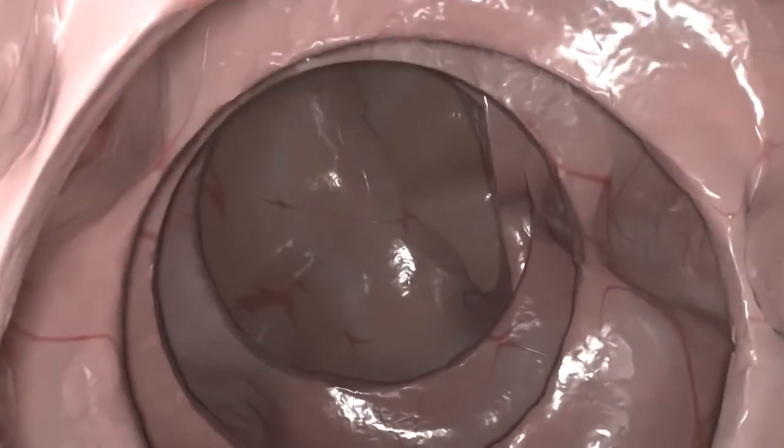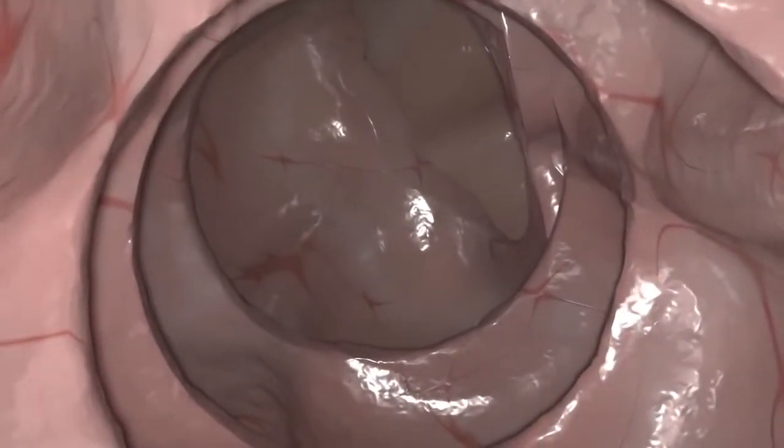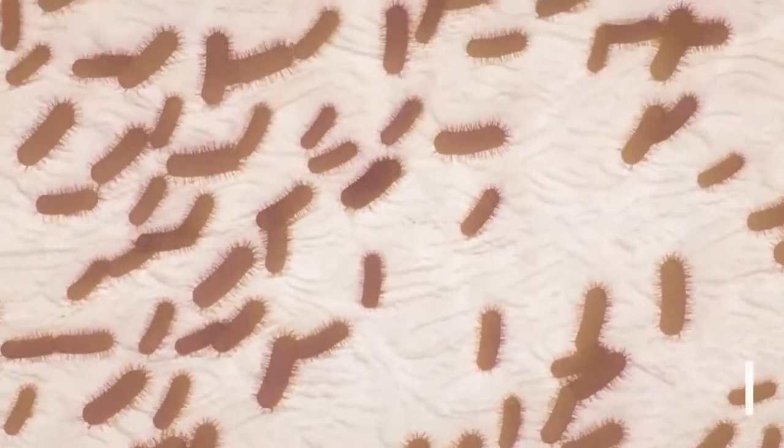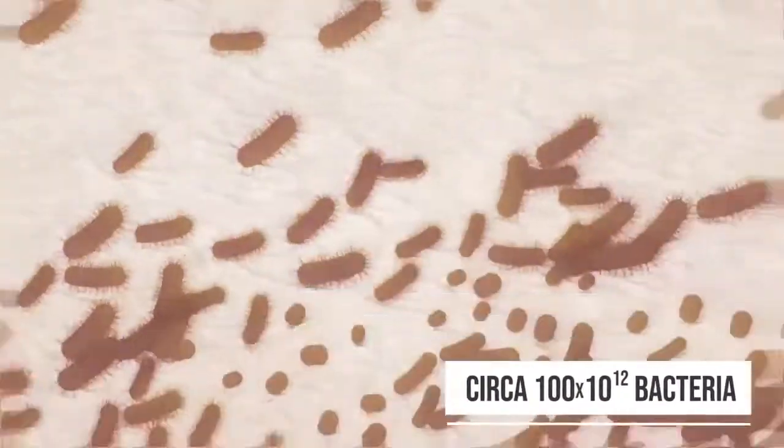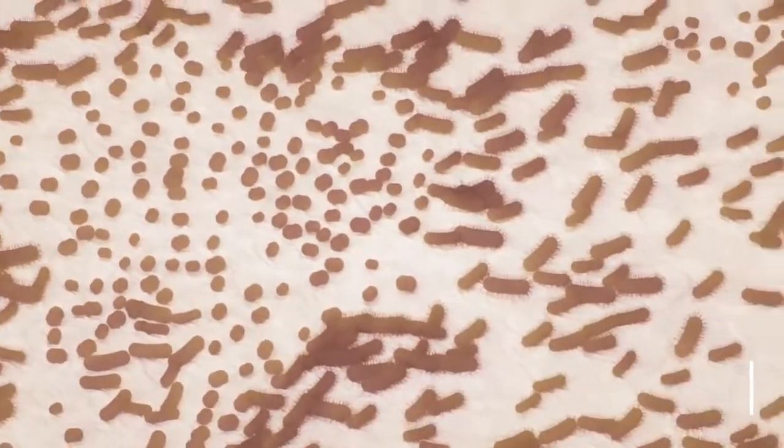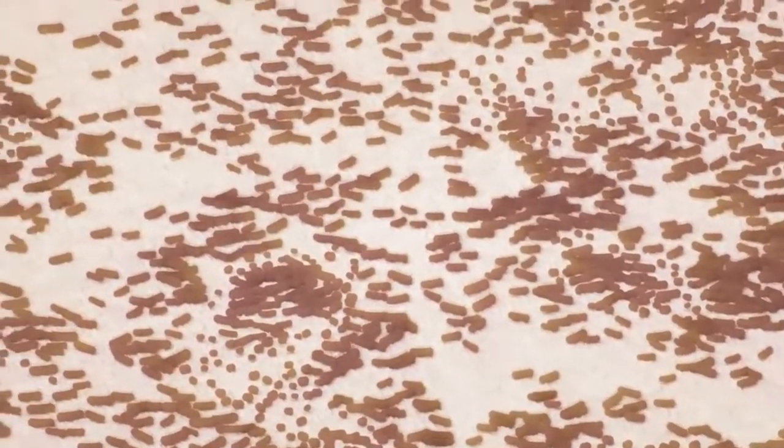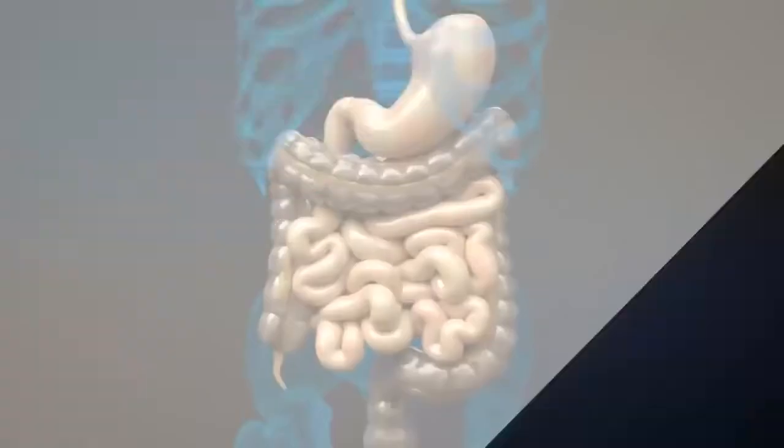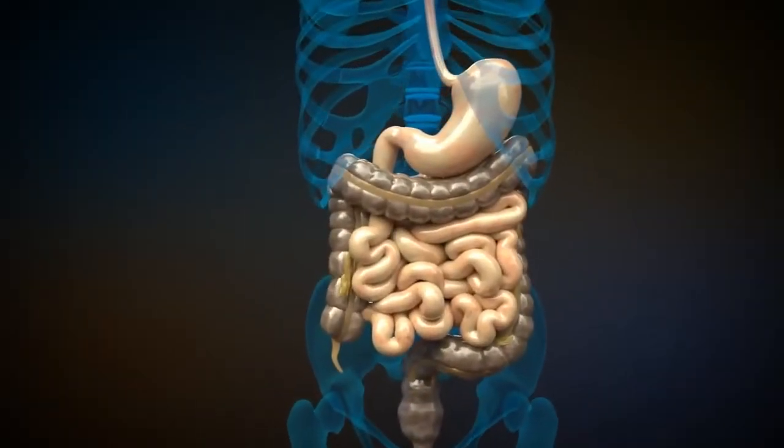The large intestine does not have any villi like the small intestine because most digestible substances have already been absorbed in the small intestine. However, the large intestine has an estimated 100 billion bacteria inside. They are important for many other tasks such as the production of vitamins and the decomposition of fiber for the body's energy production. Many of these bacteria are an important part of the immune system by killing harmful germs.